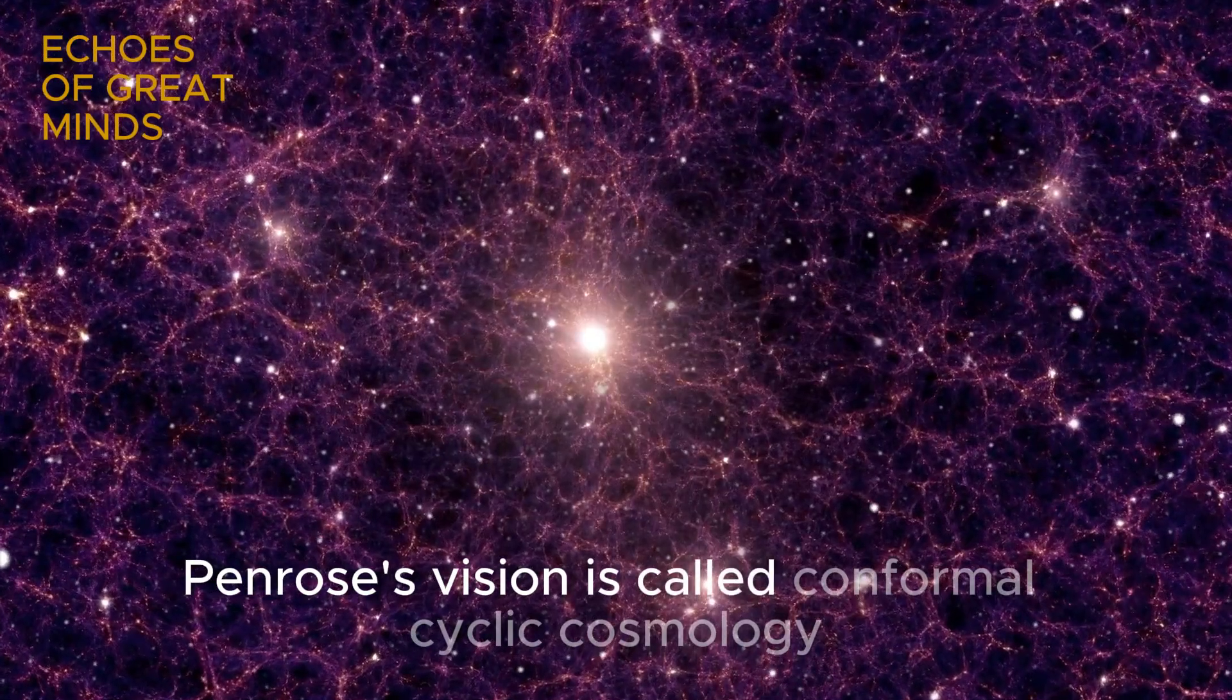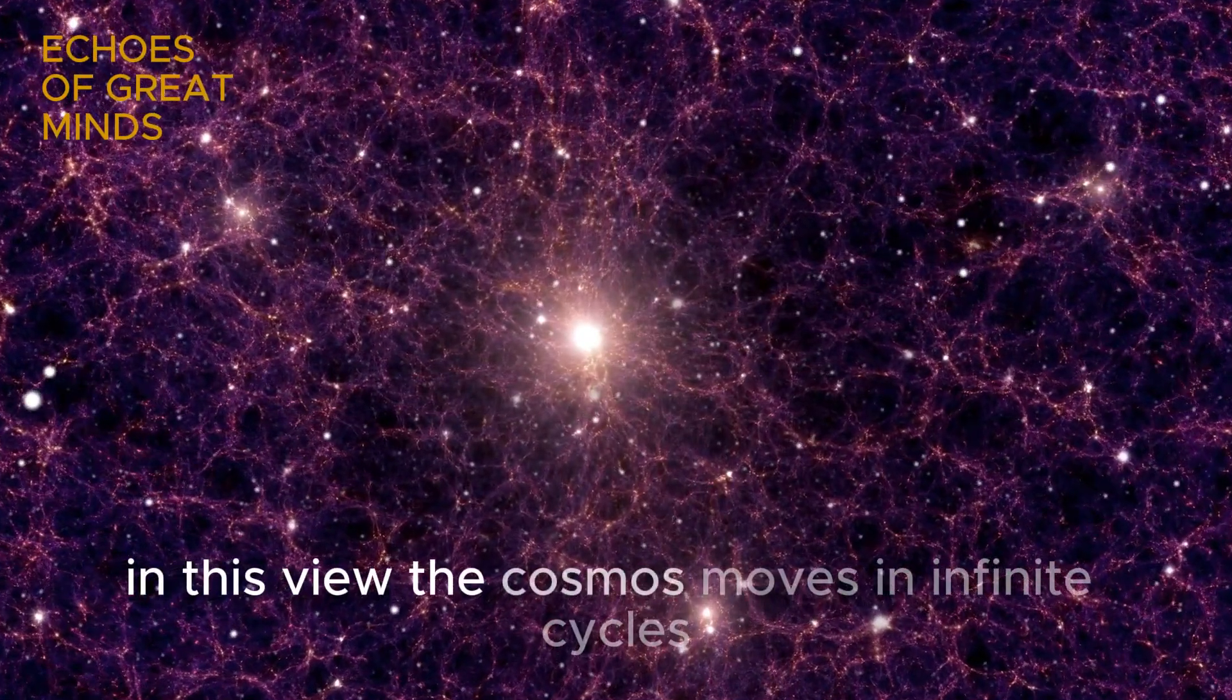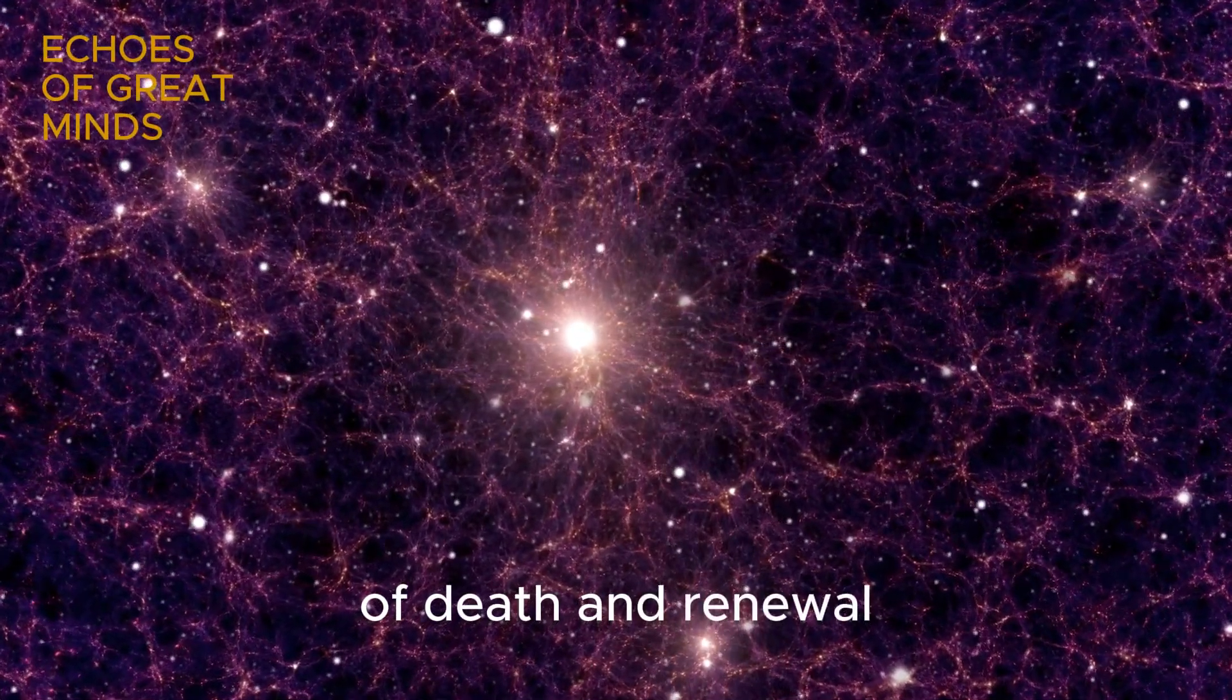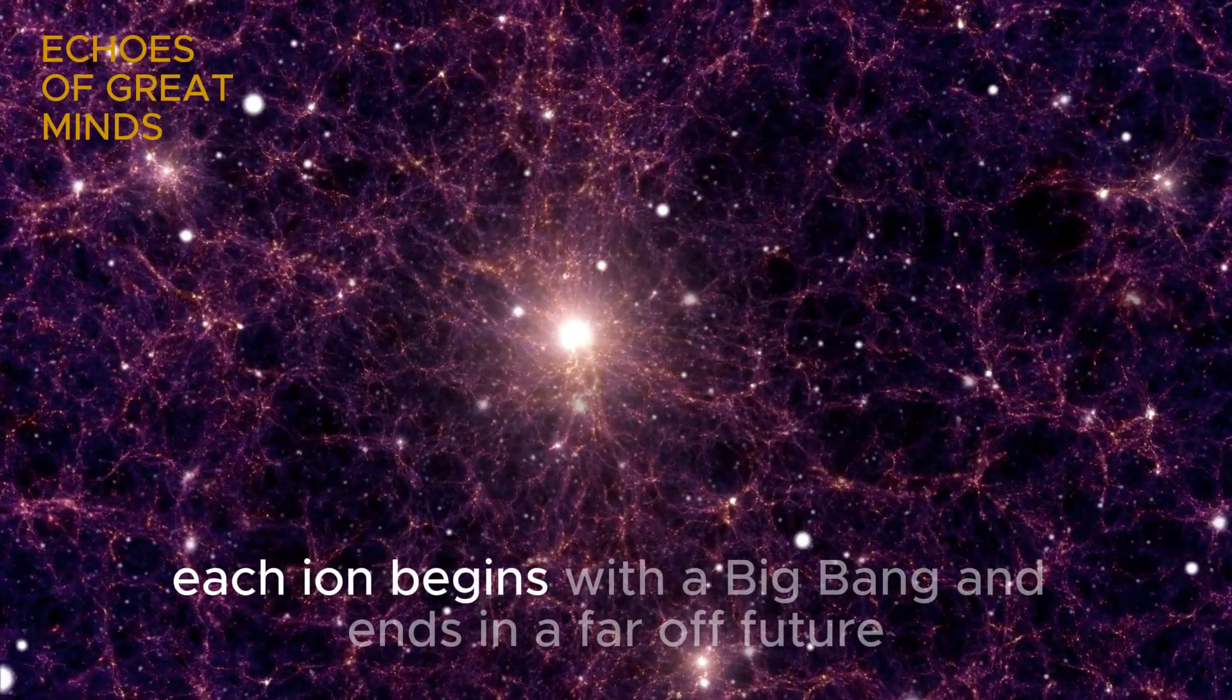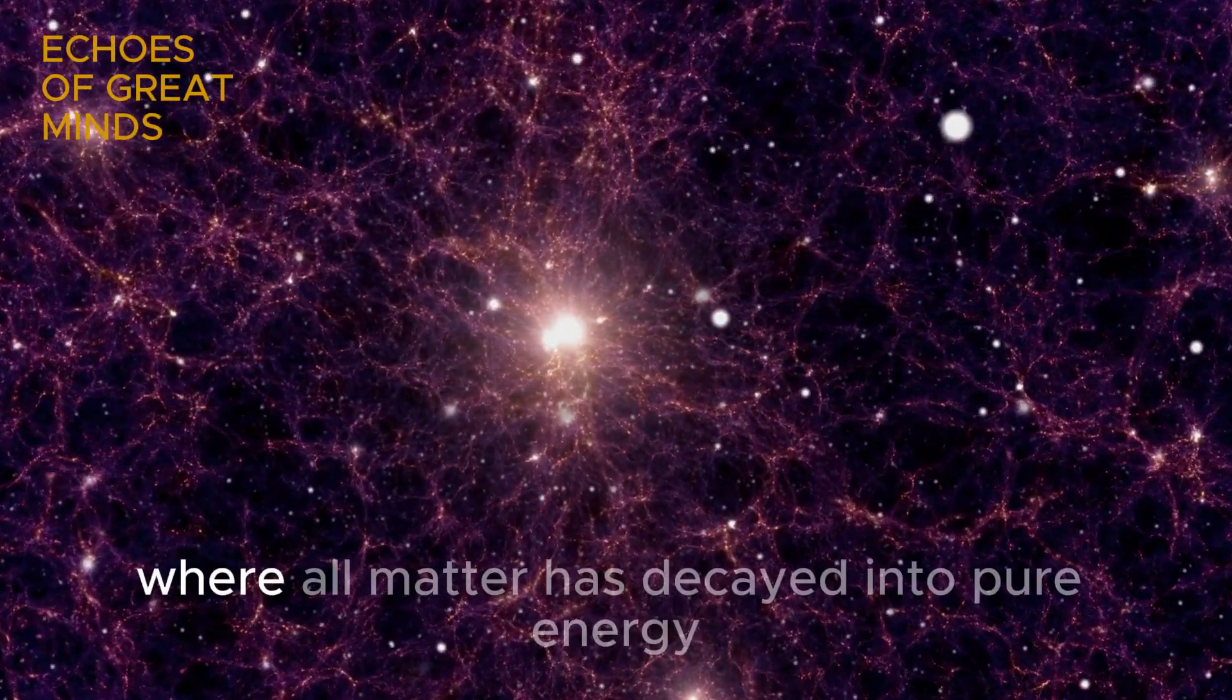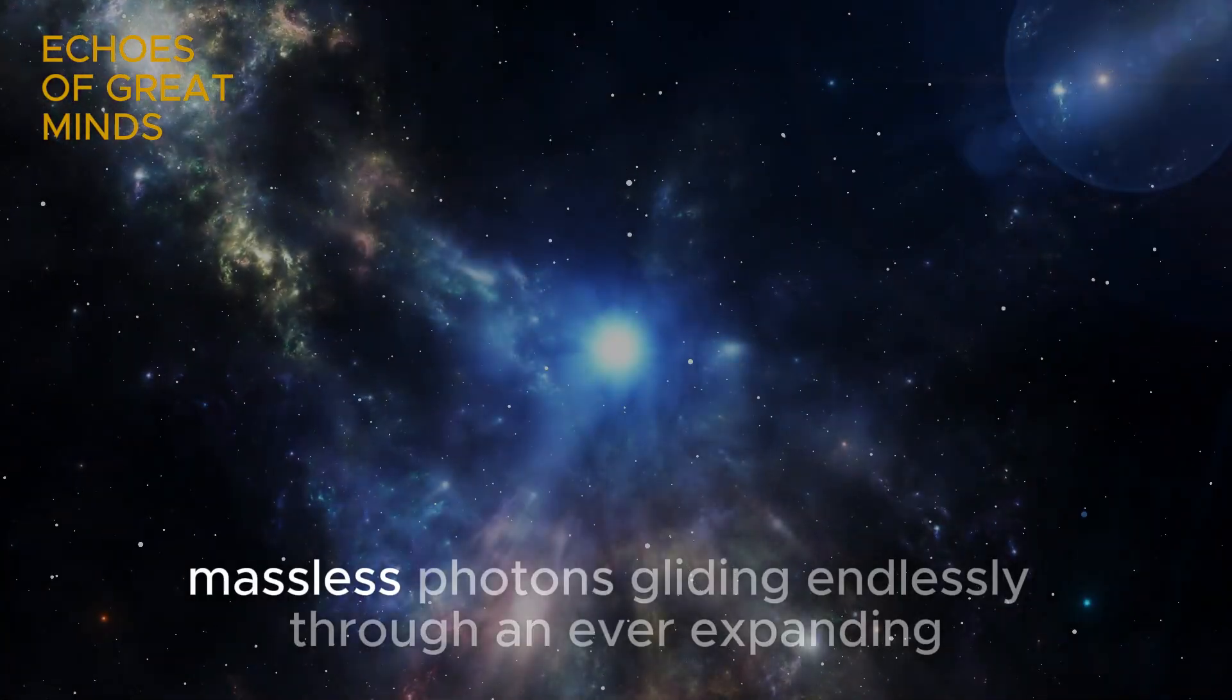Penrose's vision is called conformal cyclic cosmology. In this view, the cosmos moves in infinite cycles of death and renewal. Each aeon begins with a big bang and ends in a far-off future where all matter has decayed into pure energy, massless photons gliding endlessly through an ever-expanding cooling void.